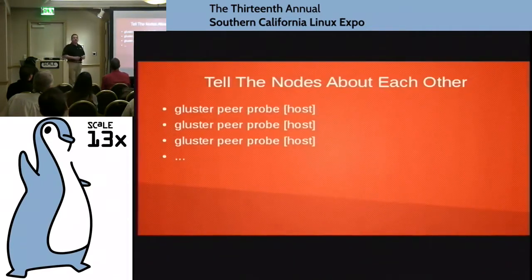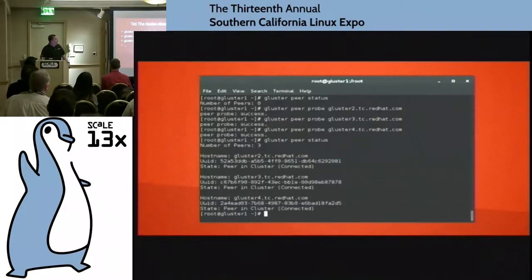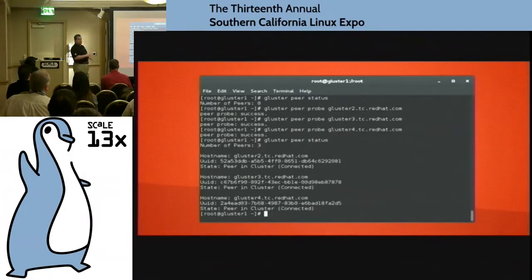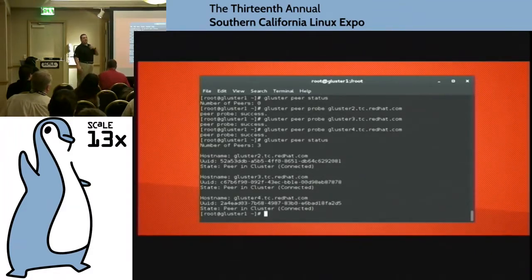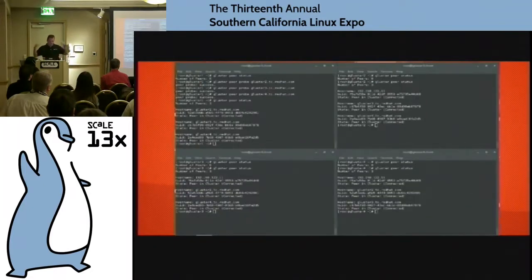Now we've got to tell the nodes about the other nodes. The way we do that is: gluster peer probe, and then the node that we want to probe. You repeat that for each one of the nodes. If you've got a whole bunch of nodes, I'd do a for loop. What I did here was I ran gluster peer status — there was nothing there. Then I did gluster peer probe gluster2, gluster3, gluster4. Now when I do gluster peer status, I can see all the nodes. It automatically considers itself as a peer node. It's real simple — gluster peer probe and we're hanging out.